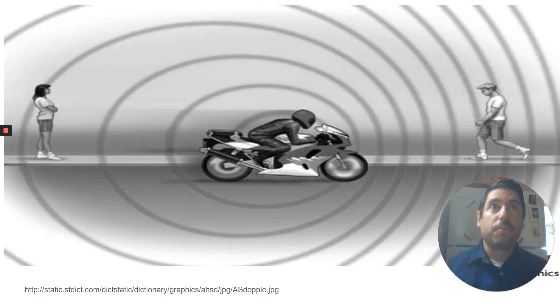So even though the motorcycle is making one sound, the person on the motorcycle is hearing one sound. It actually appears like it's sounding two different ways. Depending if the motorcycle is coming towards you, it's going to sound higher pitched. And if it's going away from you, like the woman, it's going to be lower pitched.